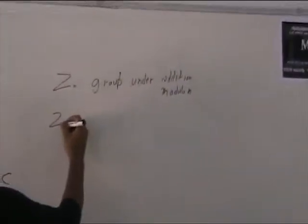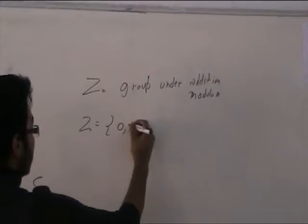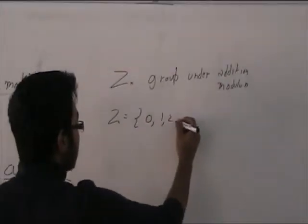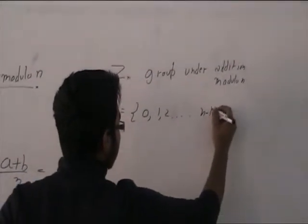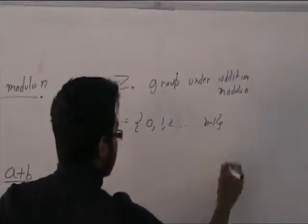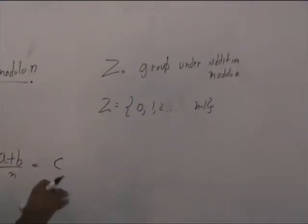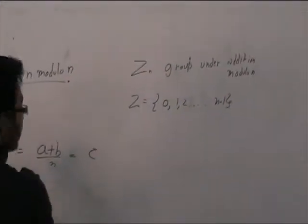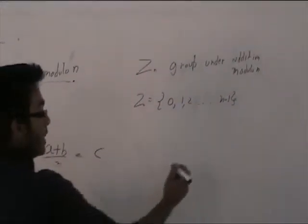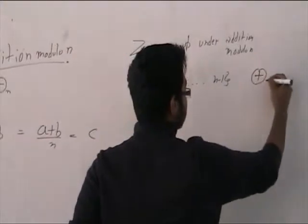Zn is basically the set {0, 1, 2, ..., n minus 1}. I will take an example and show that it forms a group, using Cayley's table for the binary operation of addition modulo n.